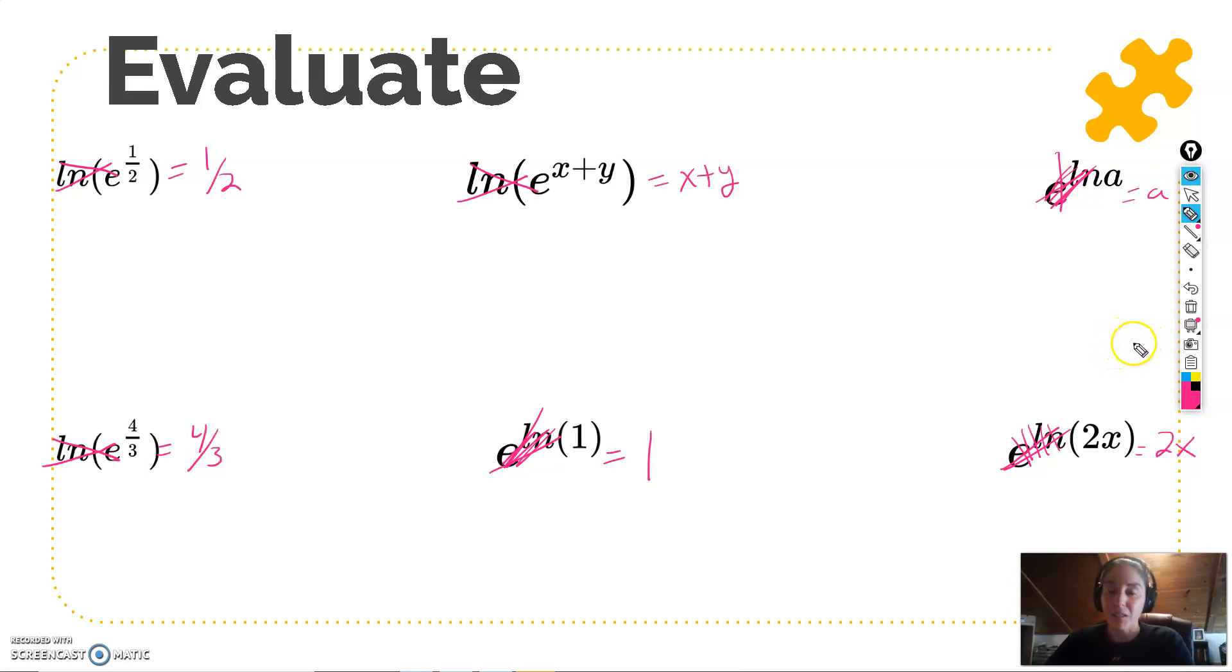Compositions of inverse functions cancel out, or more likely, just equal 1. So whatever your argument is, it's just going to drop out, and that'll be what your answer is.